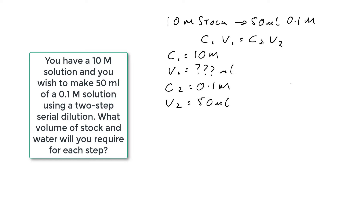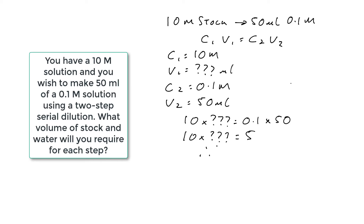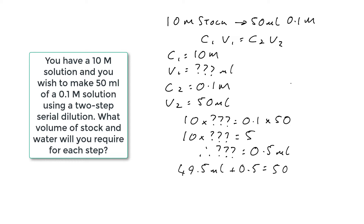If we substitute these values into the equation we get 10 multiplied by V1 is equal to 0.1 multiplied by 50. This means 10 multiplied by V1 is equal to 5, therefore V1 must be equal to 0.5 mils. So to dilute the 10 molar stock to give us 50 mils of a 0.1 molar solution, we would need to take 49.5 mils of water and add 0.5 mils of the stock solution.